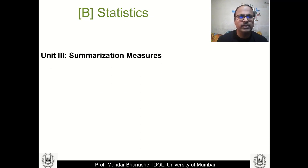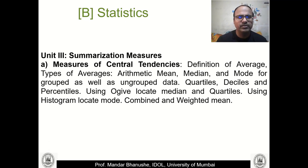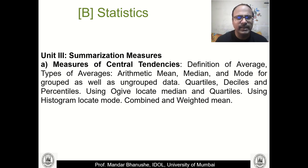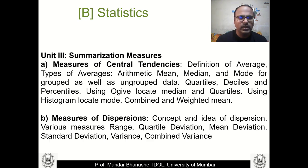Unit 3 is Summarization Measures, where we talk about different types of averages — mean, median, and mode — for grouped as well as ungrouped data. We also cover quartiles, deciles, and percentiles and their graphical representation. Additionally, we shall see measures of dispersion, including standard deviation, quartile deviation, mean deviation, and variance.